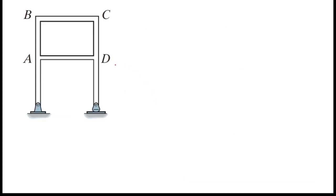In the fourth example, we have a frame with a loop. If there is a loop, we must cut the loop and divide the structure into two parts. So I cut this loop and divide the structure into two parts.